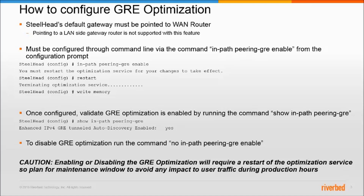Now, in order to enable this feature, you must enable it through the command line, either through Serial or through SSH, via the command in-path peering-gre enable. When running this command, you will be prompted to restart the optimization service. And after doing so, be sure to write the configuration.